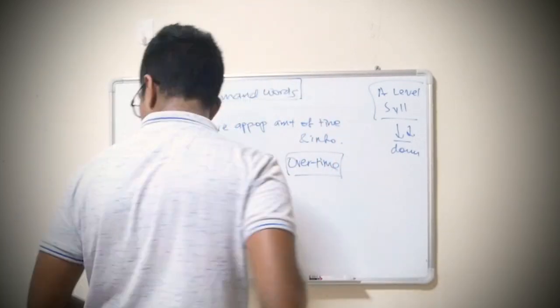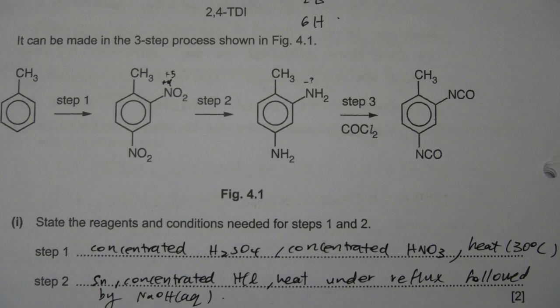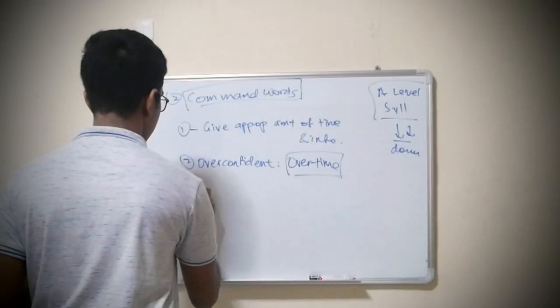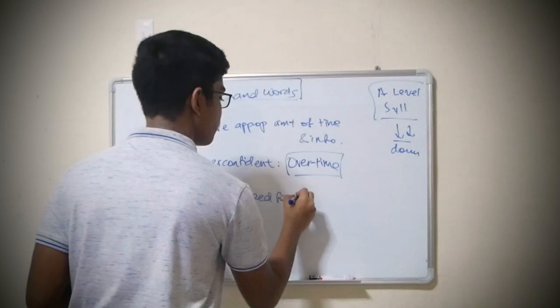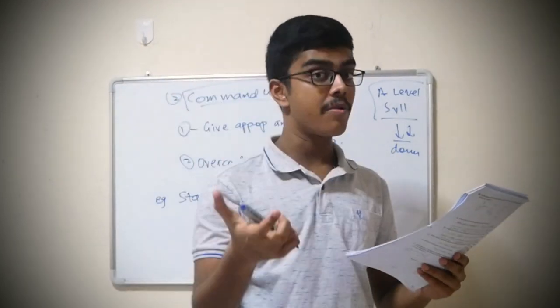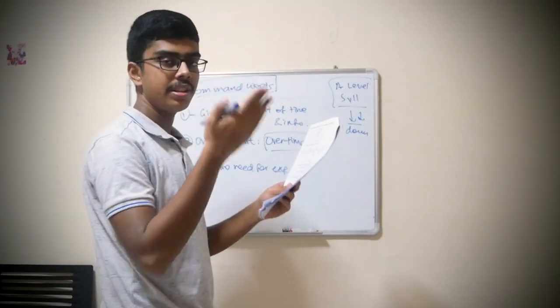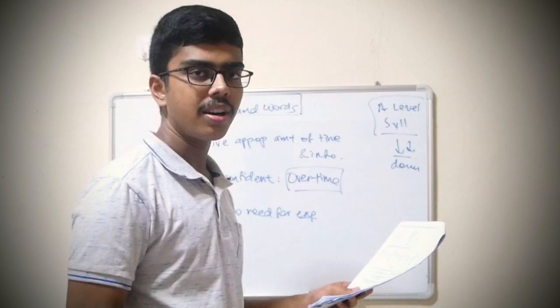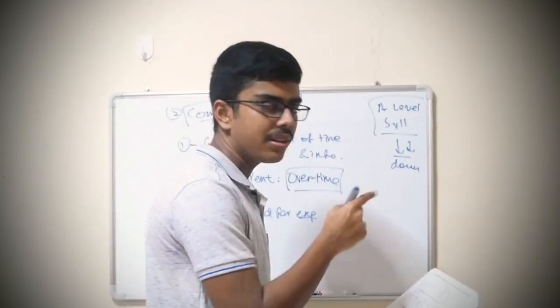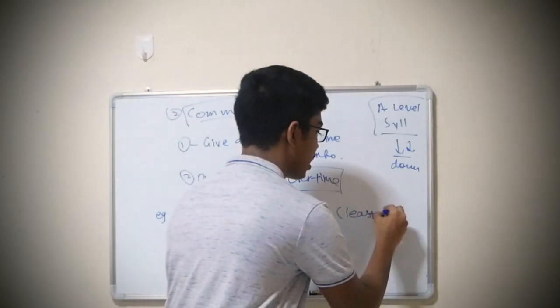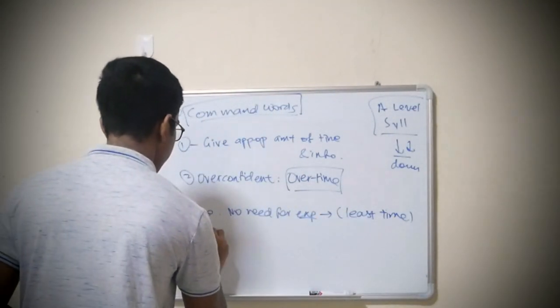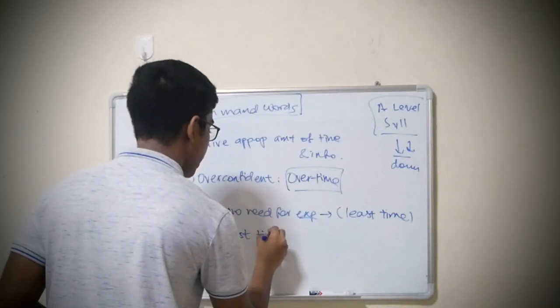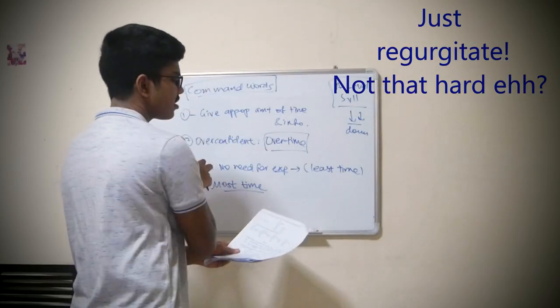Let's go to the syllabus document - think of the best approach for each command word. For example, for this question: 'State the reagents and conditions needed for step one and two.' For a state question, you just state - no need for explanation. You just write it down from whatever you memorize. Concentrated H2SO4, HNO3, heat - that's it. Write it down and get your mark. State questions are where you spend the least time.